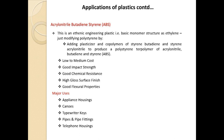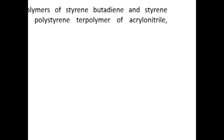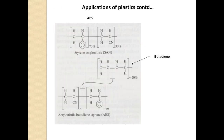Next is ABS — acrylonitrile-butadiene-styrene. This is an engineering plastic with ethylene-based monomer structure, made by a chemical reaction similar to polystyrene. It has low to medium cost, good impact strength, good chemical resistance, high gloss surface finish, and good flexural properties. Because of these properties, ABS is popular for making typewriter keys, laptop keys, pipes, pipe fittings, and telephone housings.